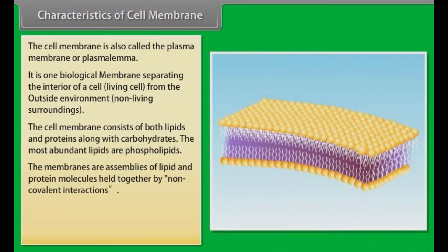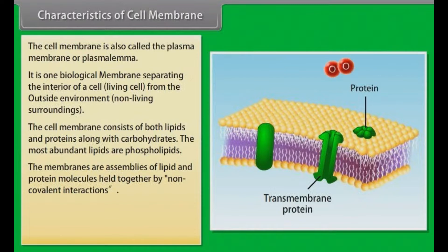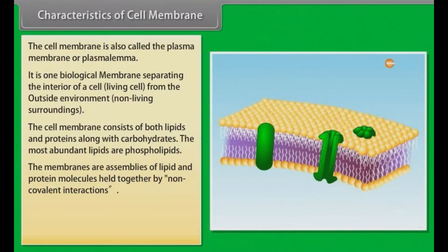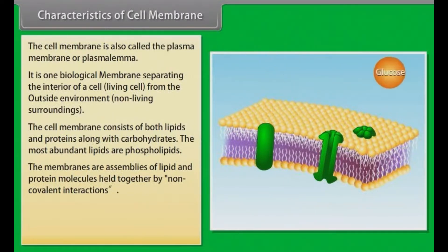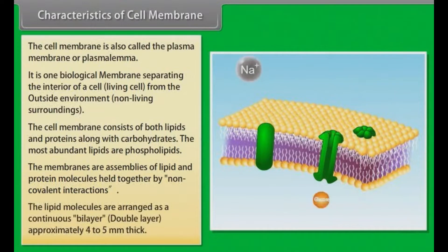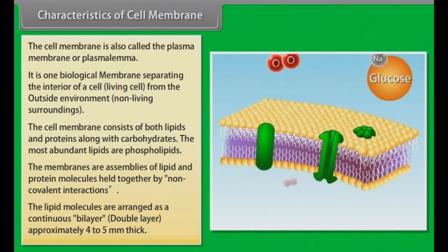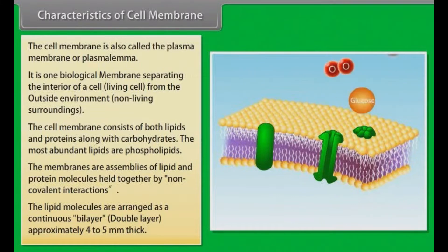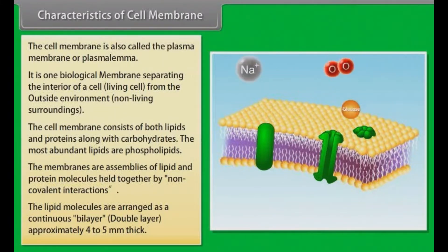The membranes are assemblies of lipid and protein molecules held together by non-covalent interactions. The lipid molecules are arranged as a continuous bilayer, that is, a double layer, approximately 4 to 5 nm thick.